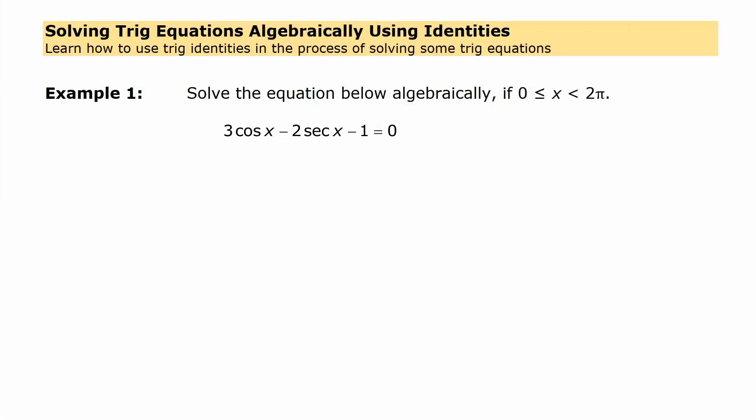So using trig identities in the process of solving trig equations, I've got a couple of examples here. The first of which is this one, and you'd suspect that trig identities would be helpful because something you can notice is that it involves two different trig functions. When you have two different trig functions you can use identities to make a replacement for one of them so that you only have one trig function and then you can go about solving it. In this case we're not going to be able to do it unless we use a trig identity.